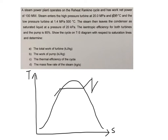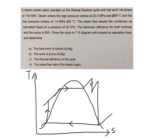You have the reheat part coming into your low pressure turbine, and this will be your low pressure section, and this will be your pump. The cycle components are: the pump, the boiler, the high pressure turbine, the reheating part, and the low pressure turbine. We label the states 1, 2, 3, 4, 5, and 6.